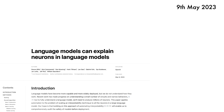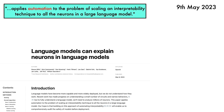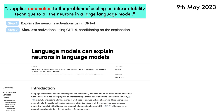Language models can explain neurons in language models is new research from OpenAI. This paper applies automation to the problem of scaling an interpretability technique to all the neurons in a large language model. There are three steps: first, explain the neurons' activations using GPT-4; second, simulate activations using GPT-4, conditioning on the explanation; and third, score the explanation by comparing the simulated and real activations.